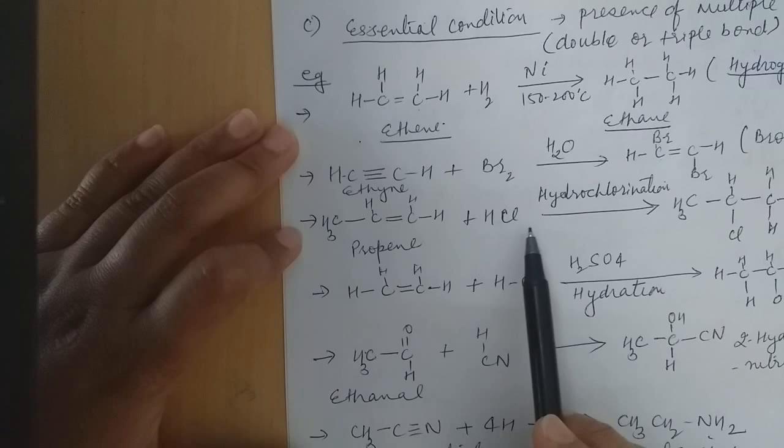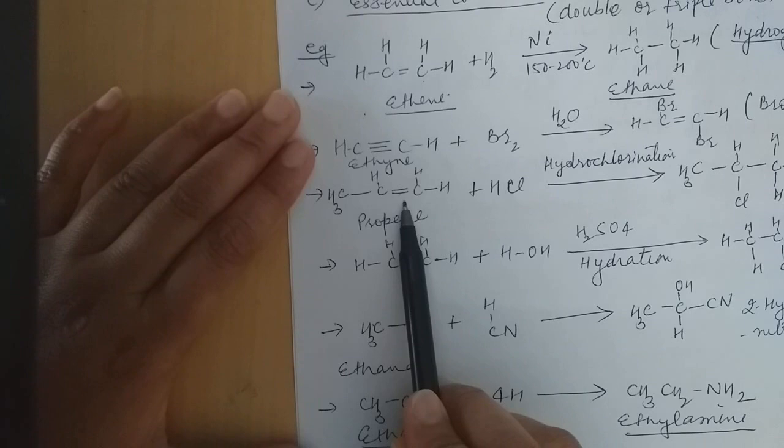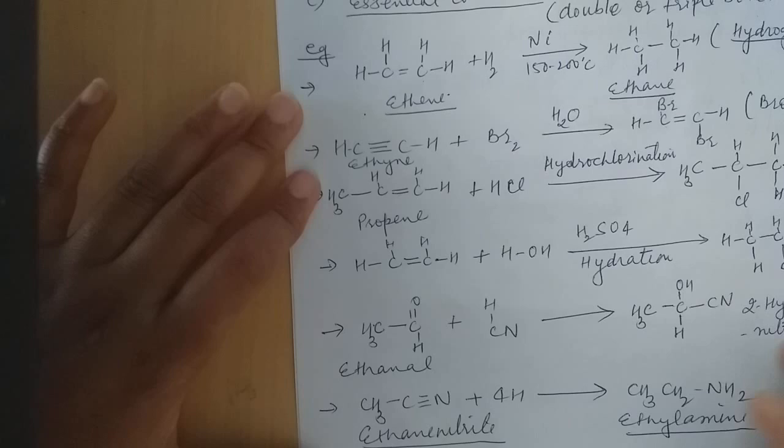If we go for hydrochlorination, that is HCl addition. The double bond breaks and H and Cl of HCl attach on the propene — the alkene — and a new addition product is formed here.